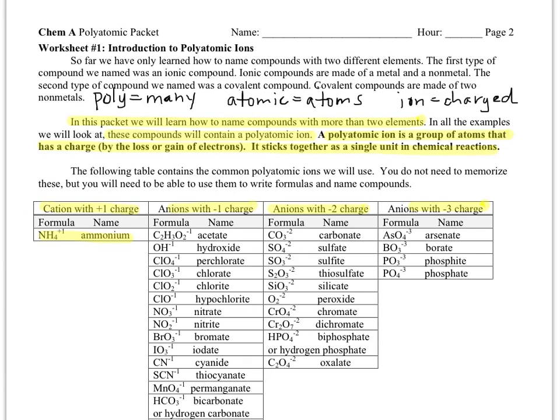This is worksheet one of the polyatomic packet. And this packet is going to be similar to the last two packets in that we're going to learn how to name a type of compound basically and we're also going to learn how to draw pictures of it.